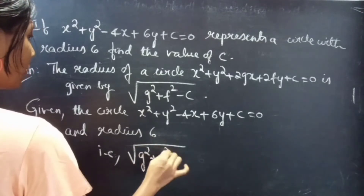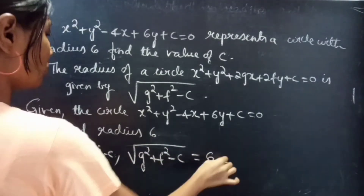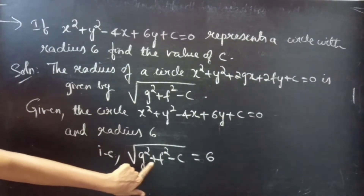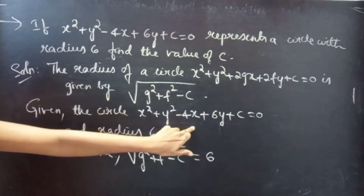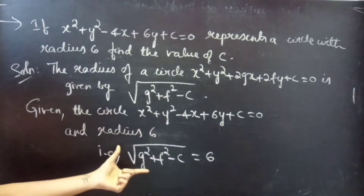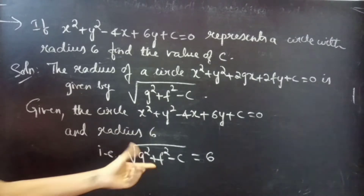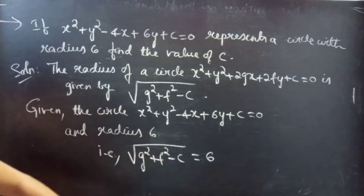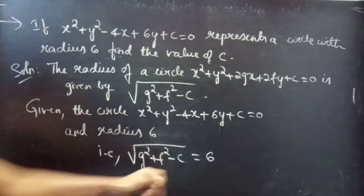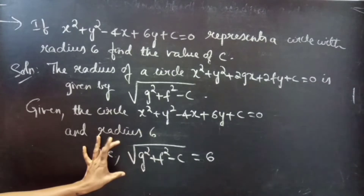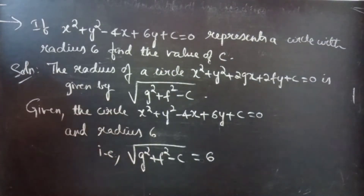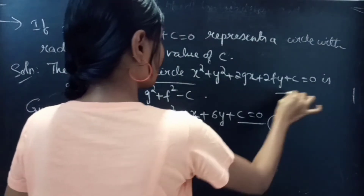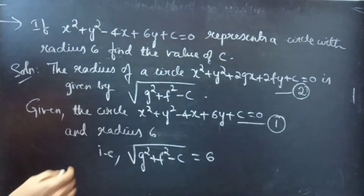We know that the radius of a circle in standard form x² + y² + 2gx + 2fy + c = 0 is given by √(g² + f² - c). So we need to find the values of g and f by comparing the two equations, and after substituting g and f values into the radius condition, we will get the value of c.